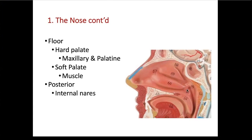Posteriorly, the opening going into the nasal pharynx is called the internal nares. So you had the external nares, and this is the internal nares. The hairs located in the external nares are called vibrissae, and they help trap larger substances, such as insects trying to fly into your external nares.